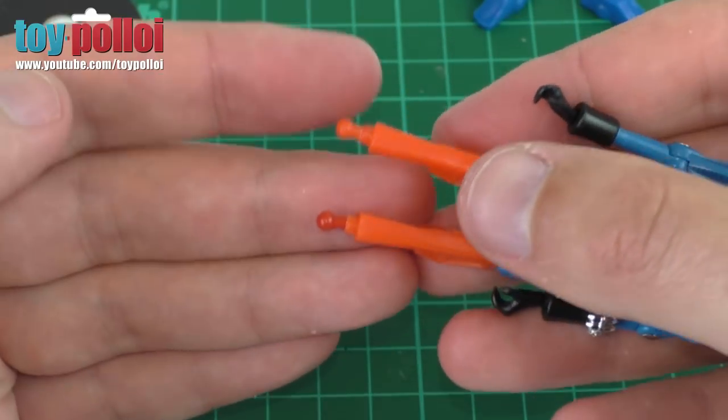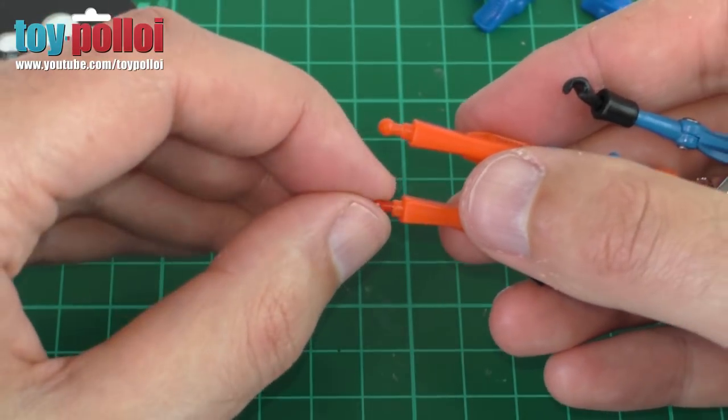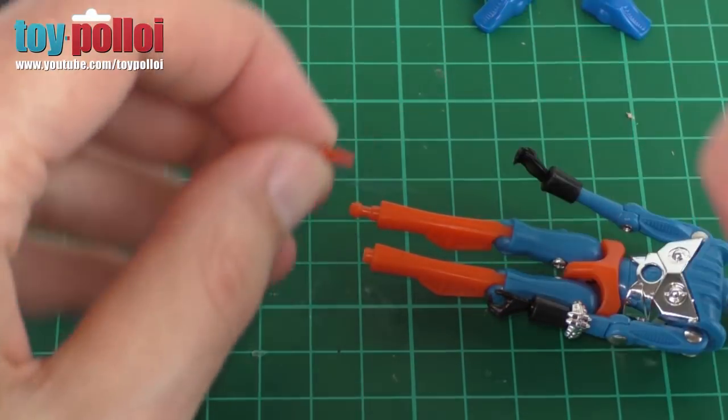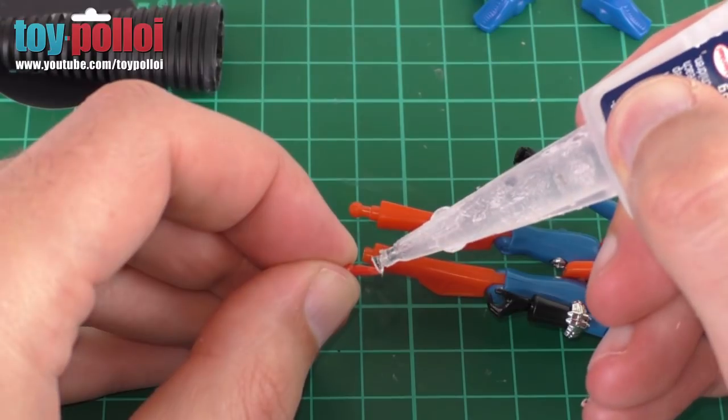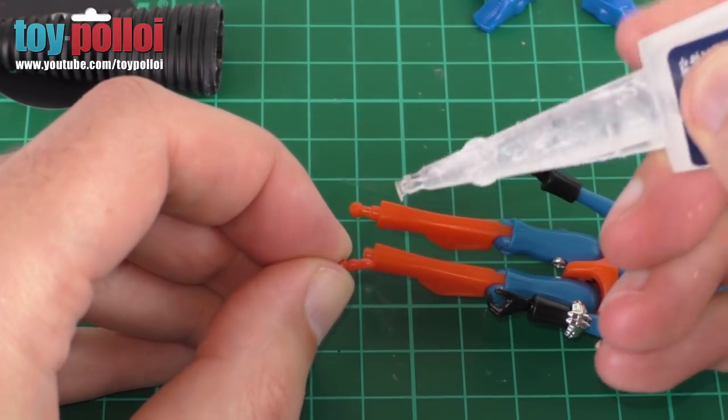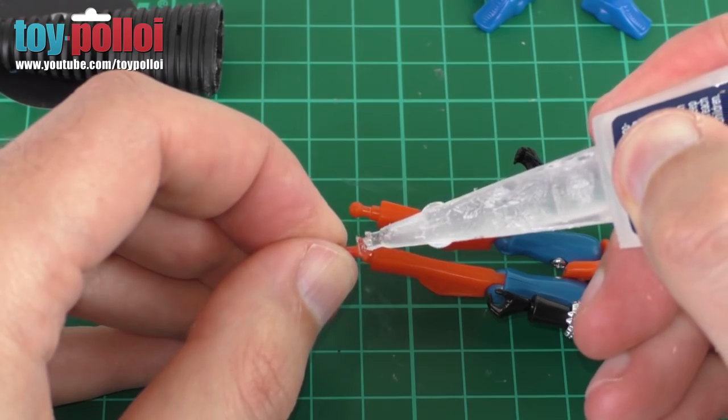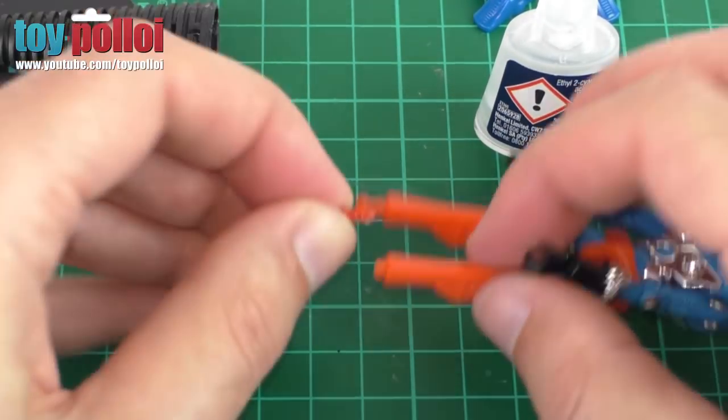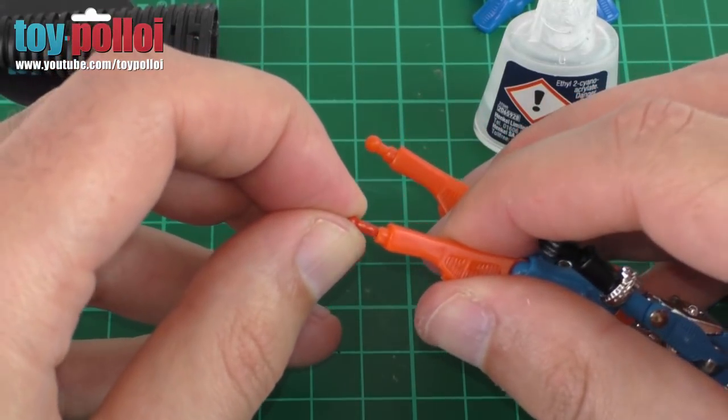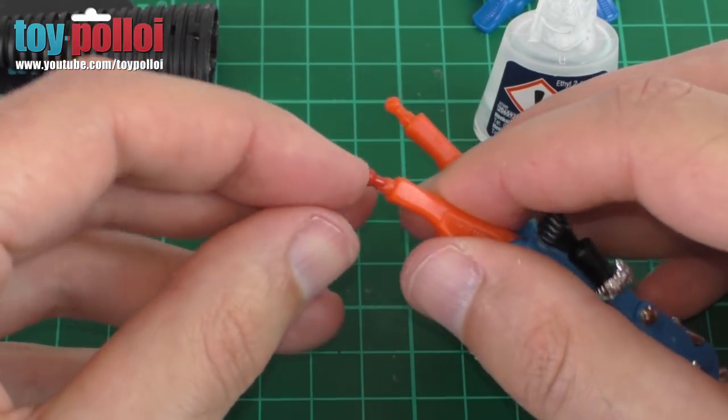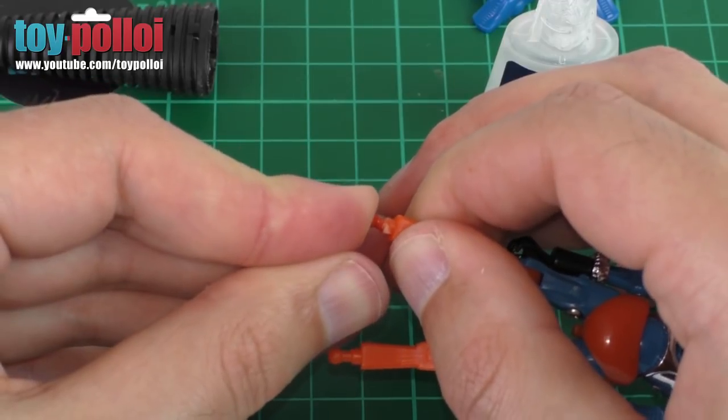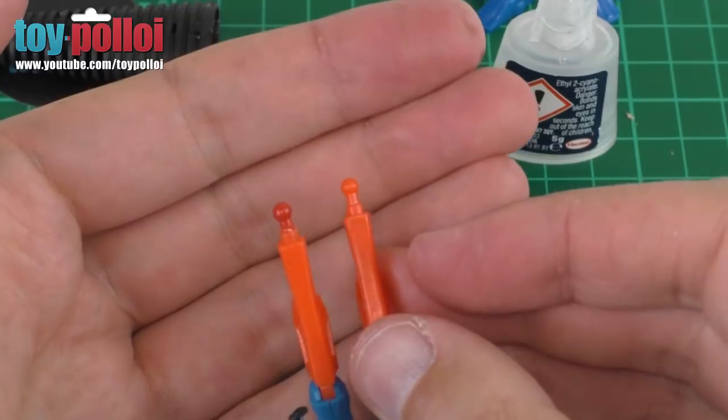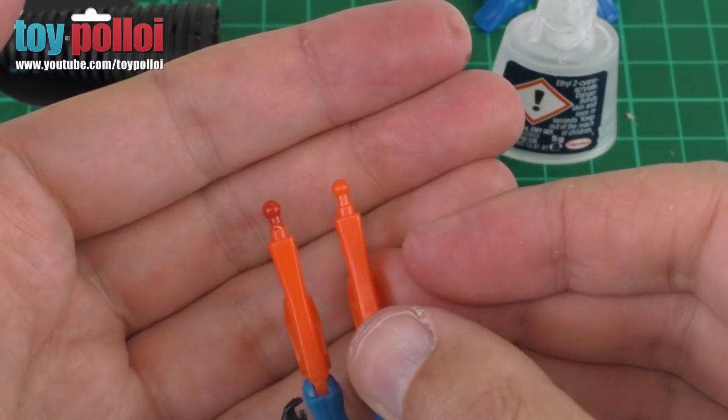So there you go, with a little bit more modification, I managed to make that one fit. To glue this in place, I'm just going to use a little bit of super glue. Just dab that on the end, just a tiny amount. We can let that dry and then test the feet to check that they still fit. So there you go. Looks pretty much like the original.